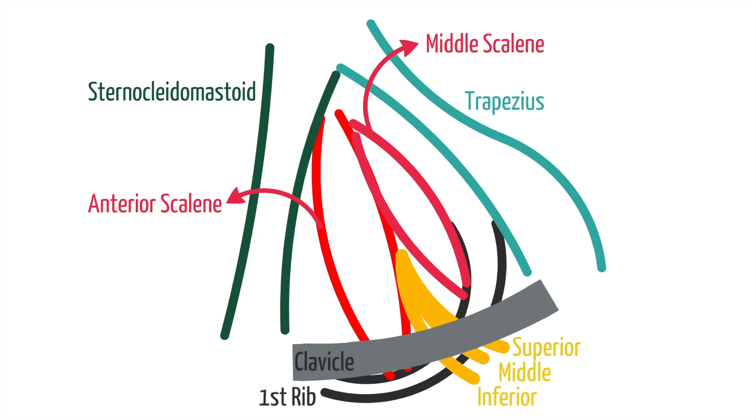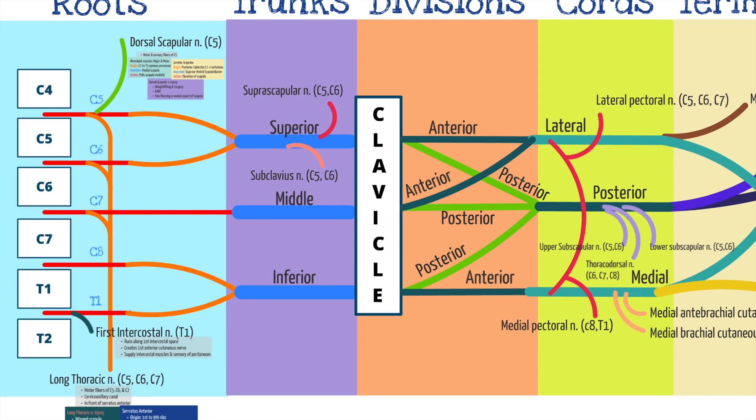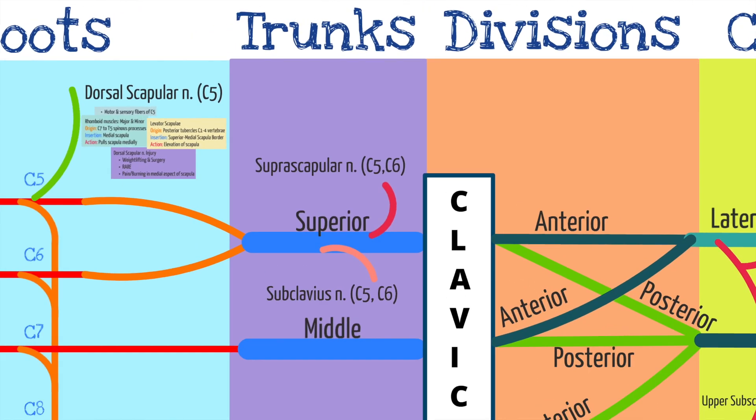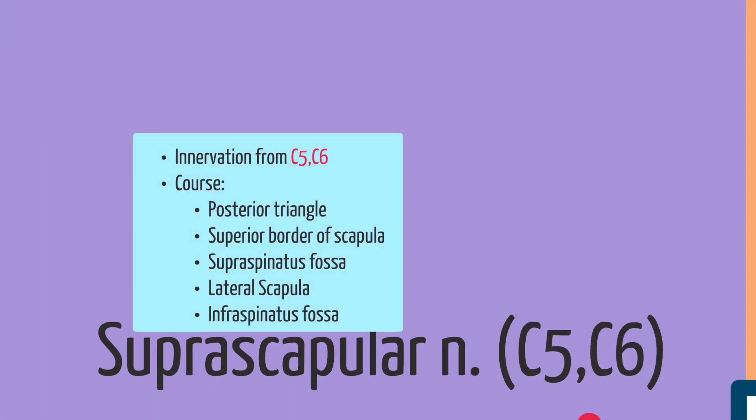There are two nerve branches that arise from the superior trunk of the brachial plexus. The first is the suprascapular nerve, which contains innervation from C5 and C6. It courses through the posterior triangle and dives deep to the trapezius muscle. The suprascapular nerve runs along the superior border of the scapula, then dives through the supraspinatus fossa and gives branches to the supraspinatus muscle. It then courses along the border of the lateral scapula into the infraspinatus fossa, where it innervates the infraspinatus muscle.